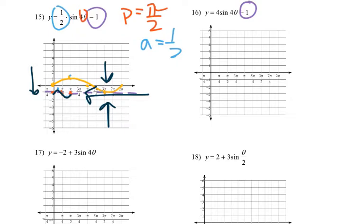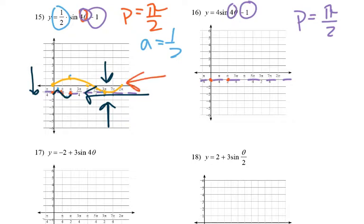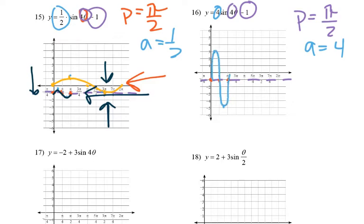Best way to do it is deal with the midline first, then the period, then the amplitude. For problem 16: negative 1 again, so we're going down 1. Another 4 here, so our period is π/2 — same as before. We start at our midline where it crosses the y-axis, and we end at π/2. That's also halfway in between. Our amplitude is 4 this time, so in between those two midline points, we go up 4 units, and in between the next two, down 4 units. This one gets really tall.